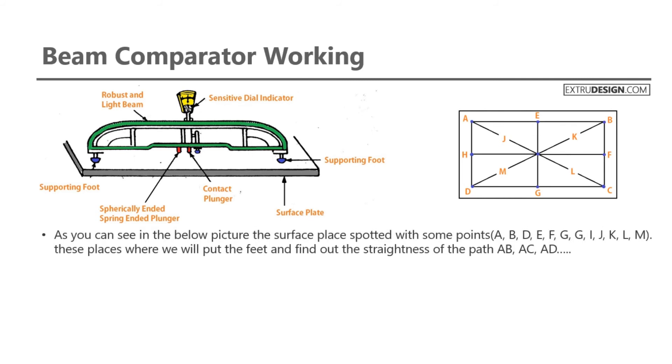As you can see in the below picture, the surface plate is spotted with some points. These are places where we will put the feet and find out the straightness of the paths: AB, AC, AD, etc.